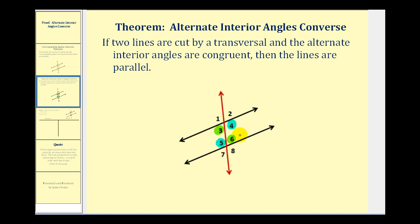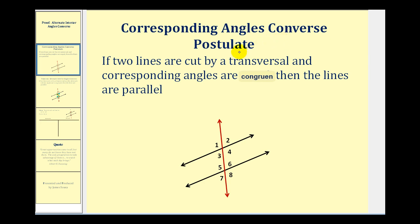The proof is going to be based upon the corresponding angles converse postulate, which states that if two lines are cut by a transversal and the corresponding angles are congruent, then the lines are parallel. So we're going to have to end up showing that the corresponding angles are congruent, and therefore by this postulate the lines will be parallel.